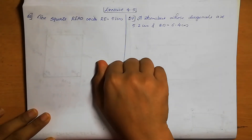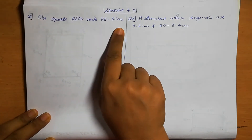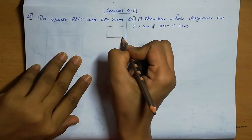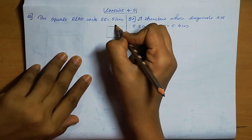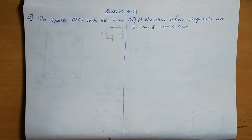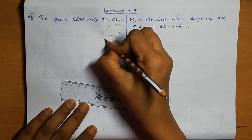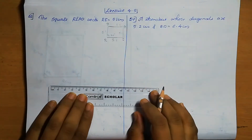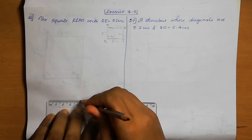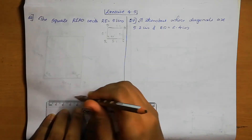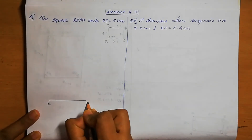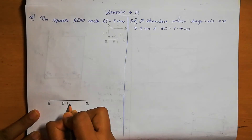Exercise 4.5, Question 1: construct a square READ with RE equal to 5.1 cm. A square means all sides are equal. So all sides are 5.1 cm and all angles are 90 degrees. We can take RE as the base at 5.1 cm.